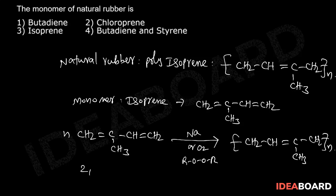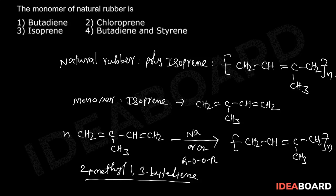That means 2-methyl-1,3-butadiene is called as isoprene. So the answer is the third option.